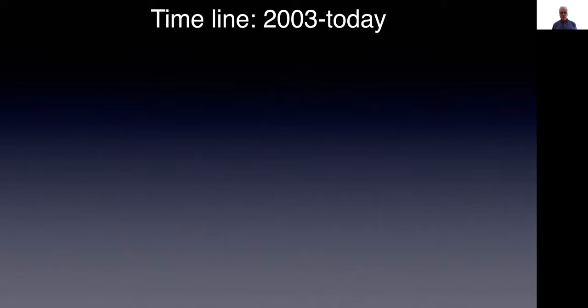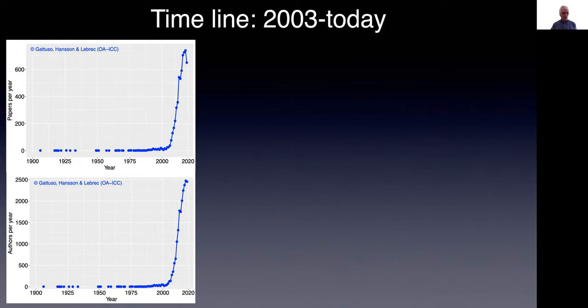So what happened from 2003 to today? When you look at the development of the field, there has been a huge increase in the number of papers published per year — more than 700 recently — and the number of authors involved in those papers, close to 2,500. There is no way that in a few minutes I can summarize ocean acidification research.